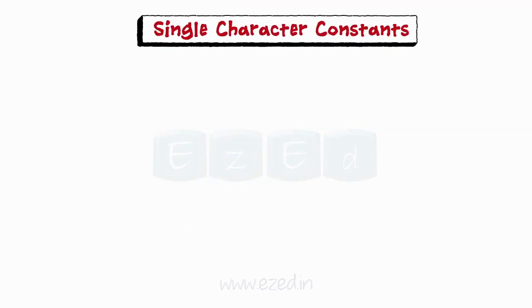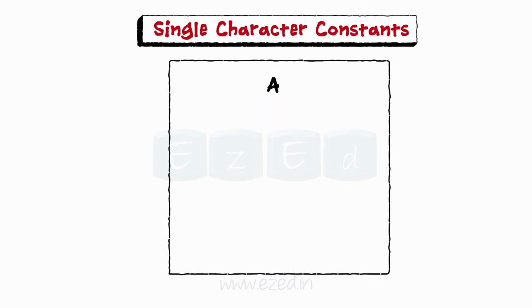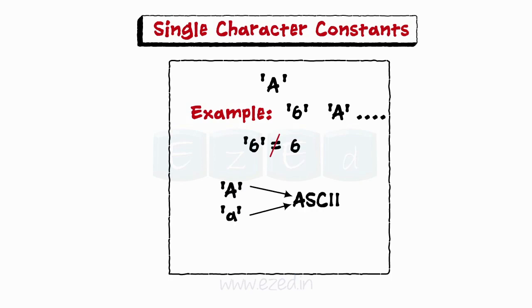Moving on to single character constant. They consist of a single character enclosed with a pair of single quotes. Example '6', 'a'. Here, this '6' is not the same as digit 6. Each character constant has an integer value known as ASCII value. The ASCII value of 'a' is 65.